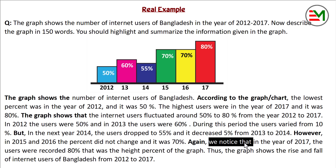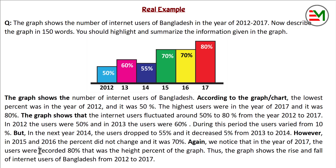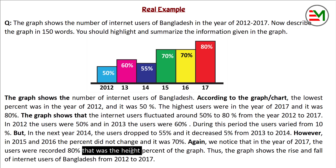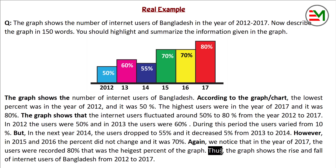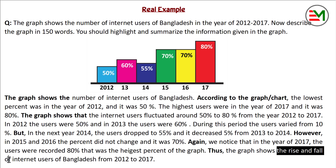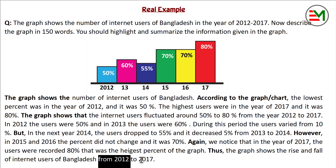We notice that in 2017, the users were recorded at 80 percent. This was the highest percent shown in the graph, representing the highest point of the rise and fall of internet users in Bangladesh from 2012 to 2017.